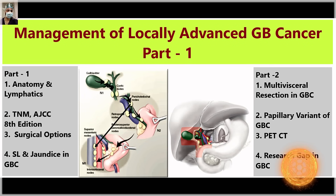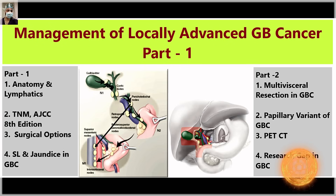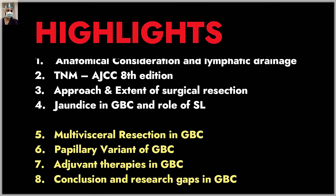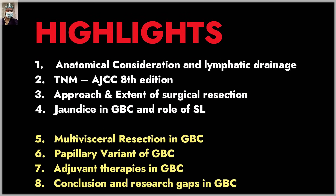We have divided this video into two parts to keep the length manageable. In the first part, we will cover the definition of locally advanced gallbladder cancer, the anatomy, lymphatics, TNM staging per the latest AJCC edition, surgical options, staging laparoscopy, and jaundice in gallbladder cancer. The second part will cover multivisceral resection, the papillary variant, PET CT, and research gaps in gallbladder cancer.